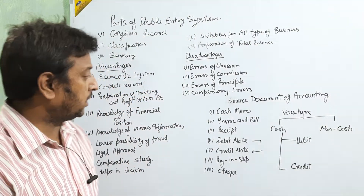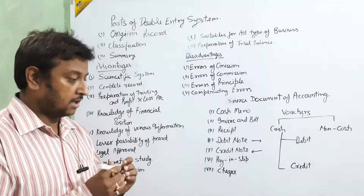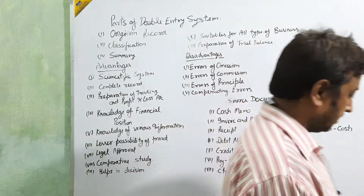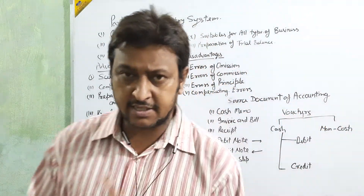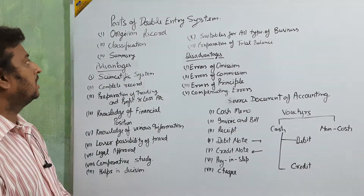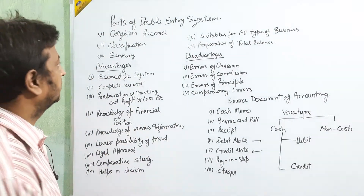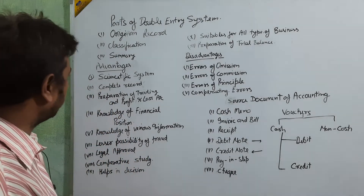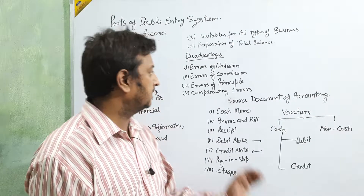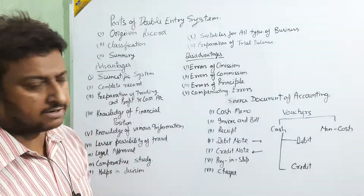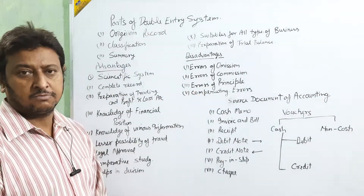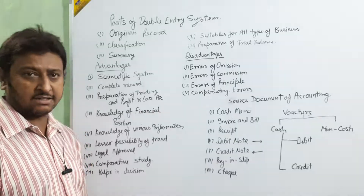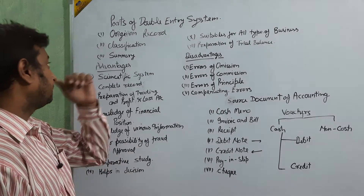Good morning. Today we are going to start the next topic in Chapter 7, after the double entry system. We are going to cover the parts of the double entry system, then advantages and disadvantages, and some more documents for accounting.